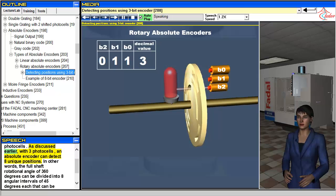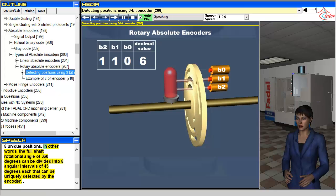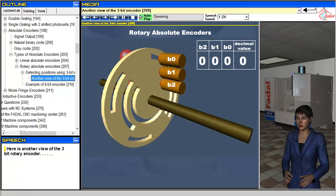The rotary absolute encoder shown here has three sets of slots and hence uses three photocells. As discussed earlier, with three photocells, an absolute encoder can detect eight unique positions. In other words, the full shaft rotational angle of 360 degrees can be divided into eight angular intervals of 45 degrees each that can be uniquely detected by the encoder. Here is another view of the three-bit rotary encoder.